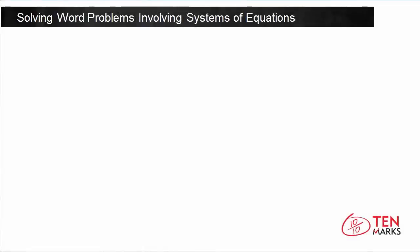Hey guys, today we're going to talk about systems of equations. A system of equations is a set of equations in which a solution is found by using all of the equations together. You can solve for the variables at the same time by using substitution or elimination. In this lesson, we're going to use both methods, and I'll also explain when it's helpful to use one method over the other.